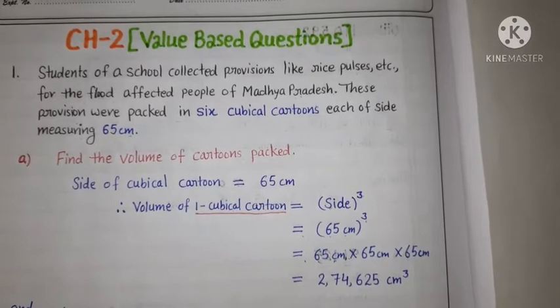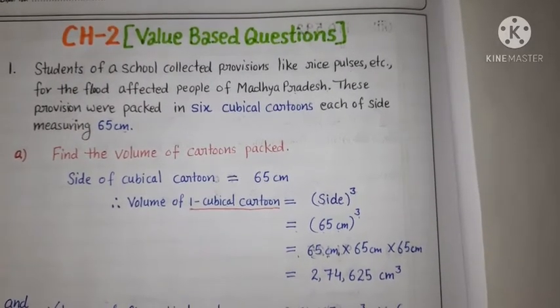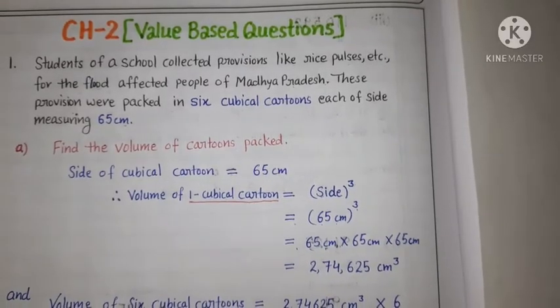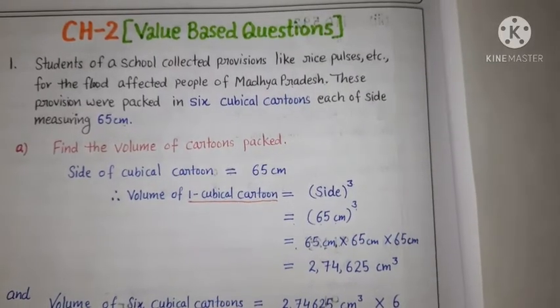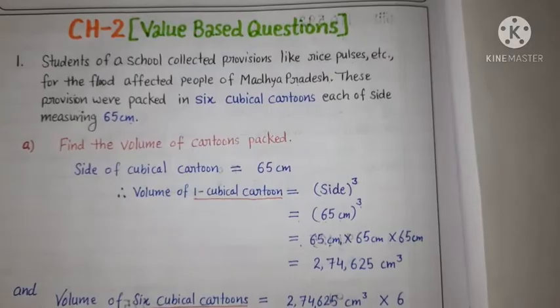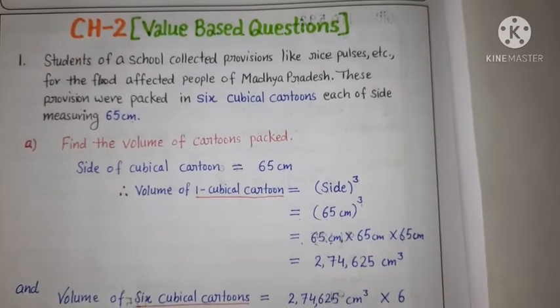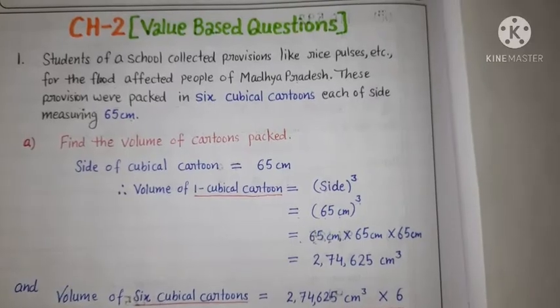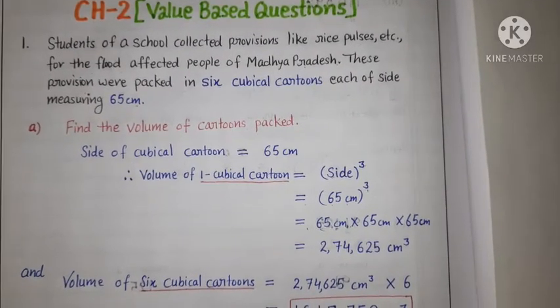Is school ke students ne khanne ka saman rice pulses flood affected people of Madhya Pradesh ke liye collect kiya. Is khanne ke saman ko unhone 6 cubical cartons mein pack kiya. Each cubical carton ki measuring side hume given hai 65 cm. First part, find the volume of cartons packed.